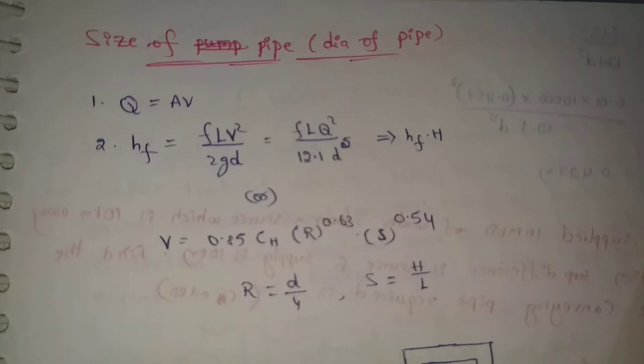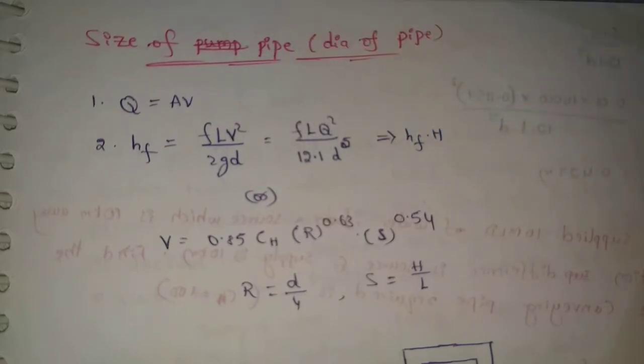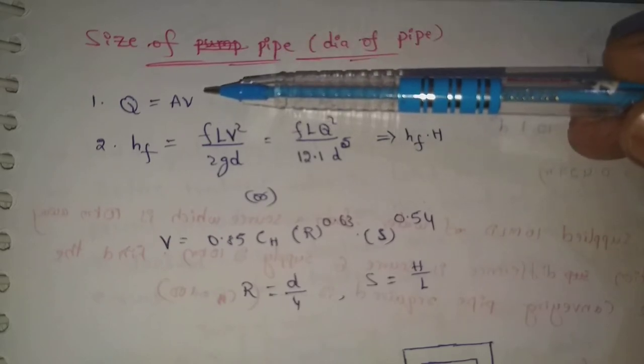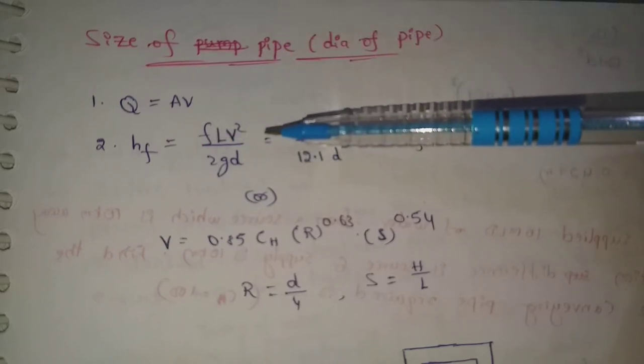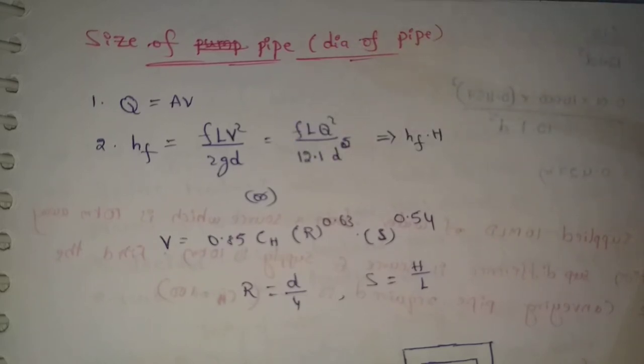First formula: Q equals AV, where Q means discharge, which equals area into velocity. Next, hf equals fLV squared by 2gd. This is the Darcy-Weisbach equation.